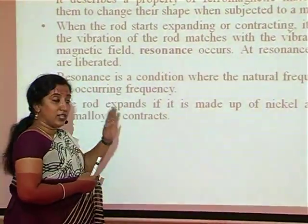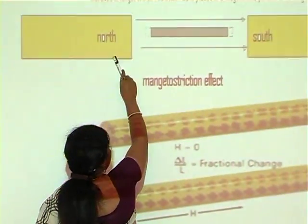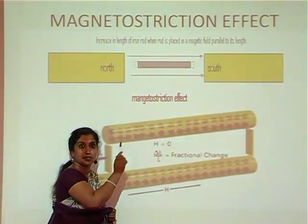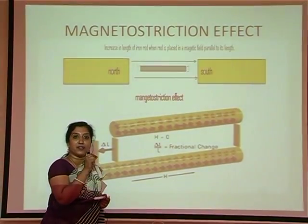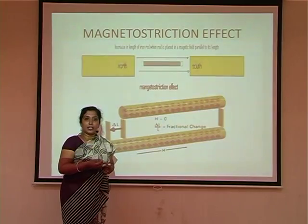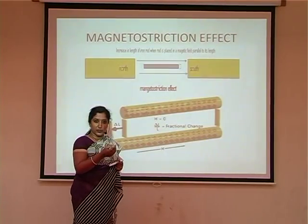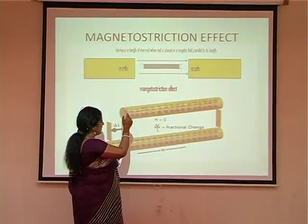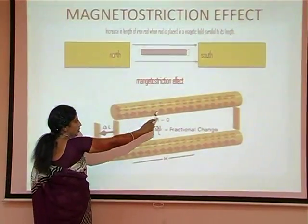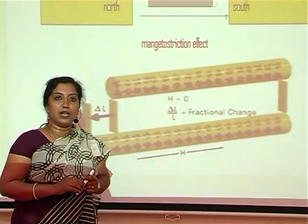A ferromagnetic rod is placed between the pole pieces of the magnet — north and south pole — and the rod slightly changes its length because of the domains present inside the ferromagnetic material. It is a magnetic property of the ferromagnetic material that makes the rod slightly expand or contract, only in microscopic dimensions — using a microscope we can see this change in length. This is the original length of the ferromagnetic rod, and microscopically it is just expanding like this. We understand the magnetostriction effect, but from here we have to produce the ultrasonic wave.